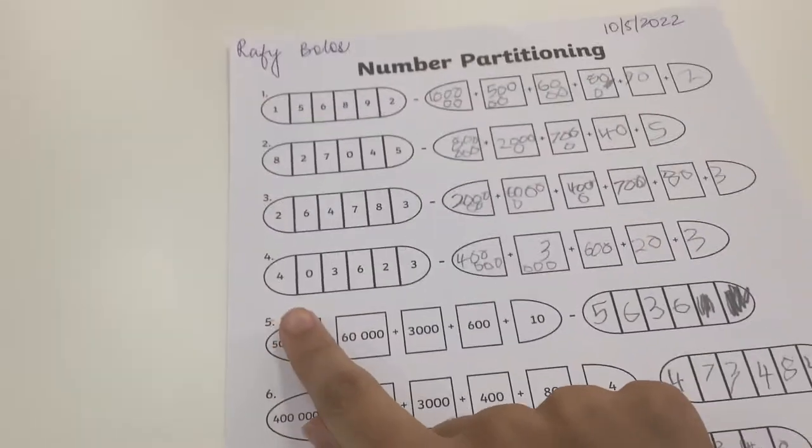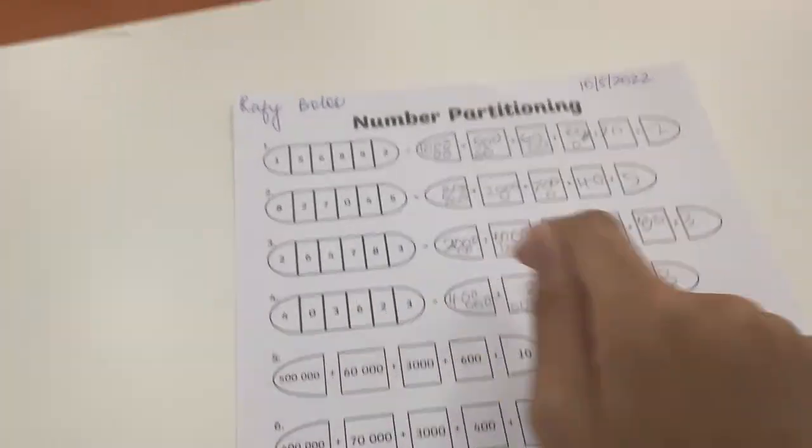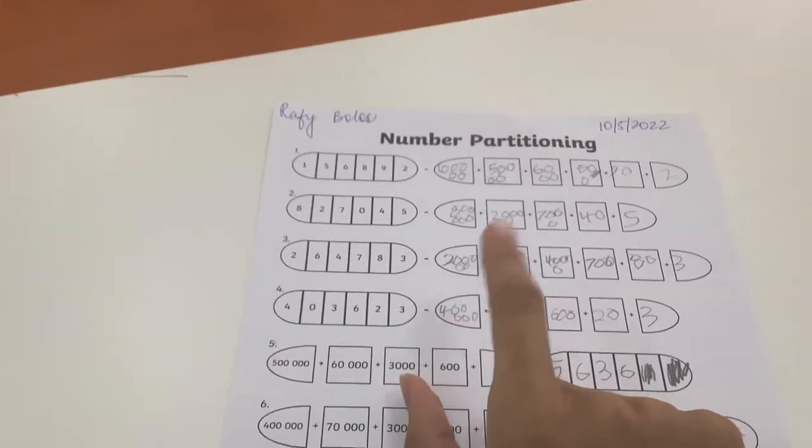Now we need four times ten to the fifth is four hundred thousand. So that would mean that you can put it here.